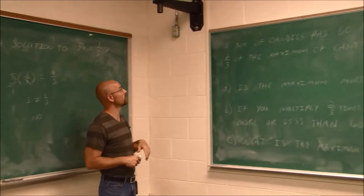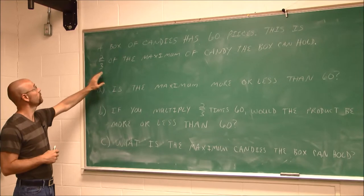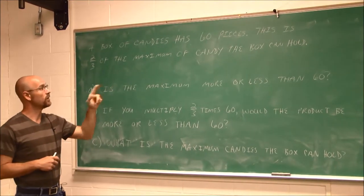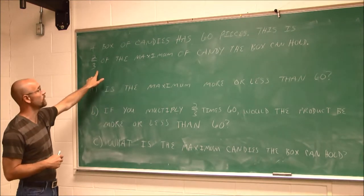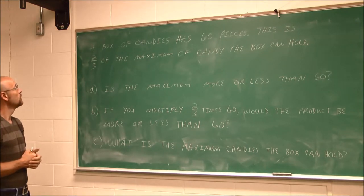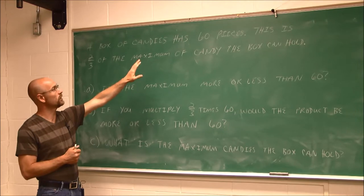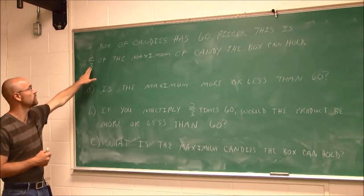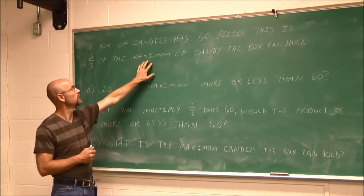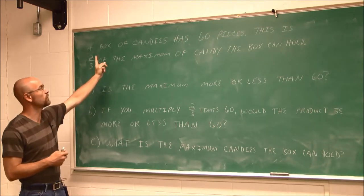A box of candies has 60 pieces. This is 2 thirds of the maximum candy the box can hold. So what's the given information? We currently have 60 candies and we're told that's only 2 thirds of the maximum — the most it could hold. So 60 is only 2 thirds of what it can hold.